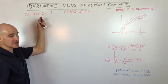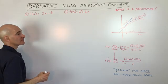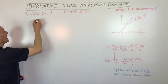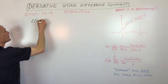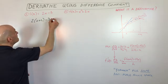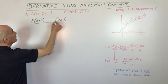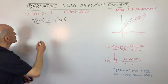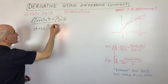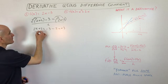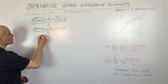This first one is a simple one: f of x equals 2x minus 3. We're going to do the difference quotient — f of x plus h minus f of x, all divided by h. If I put x plus h in for x, I get 2 times (x plus h) minus 3, minus f of x, which is (2x minus 3), all divided by h. Distributing and simplifying: 2x plus 2h minus 3, minus 2x plus 3, all divided by h. The 2x's and the 3's cancel, leaving 2h divided by h.